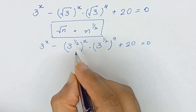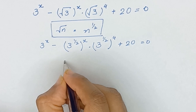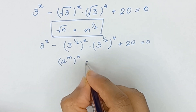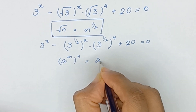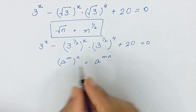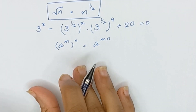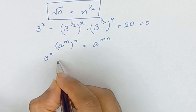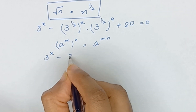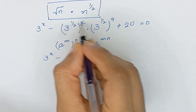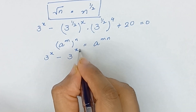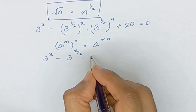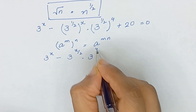Now we will use the exponential rule which is a to the power m whole power n is equal to a to the power m times n. So it will become 3 to the power x minus 3 to the power x divided by 2, times 3 to the power 4 divided by 2, plus 20 equal to 0.